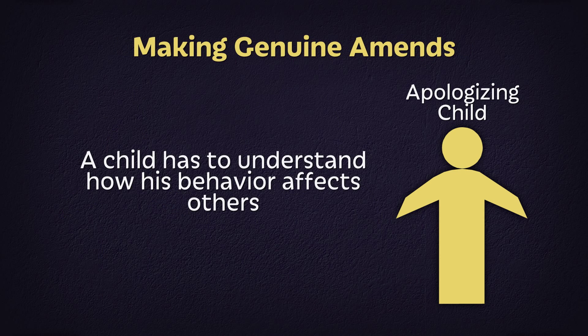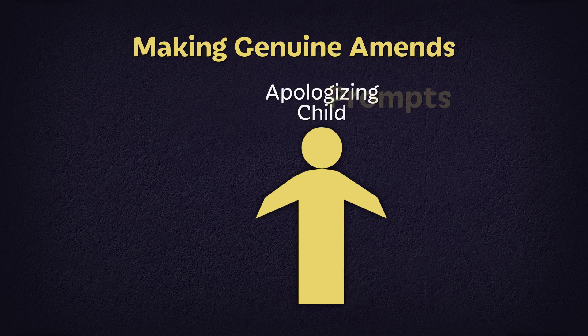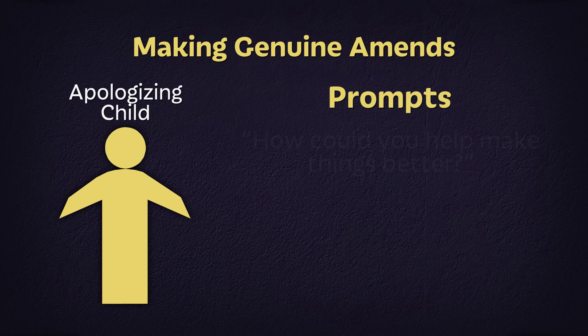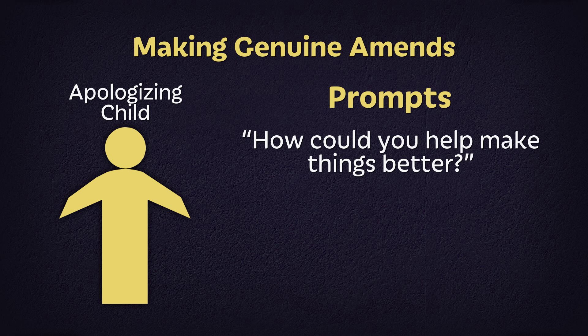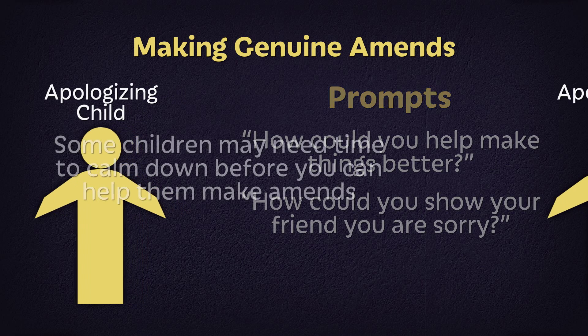For an apology to have meaning, a child has to understand how his behavior affects others. This is how children develop empathy and healthy relationship skills. Young children make amends through actions — by doing something to show they are sorry and trying to make things right again. Some children are developmentally ready to be guided through this process in the moment. Simple prompts often work, such as, 'How could you help make things better?' or 'How could you show your friend you're sorry?'